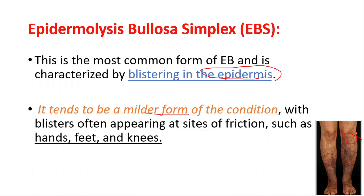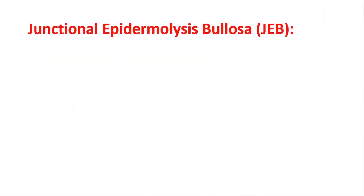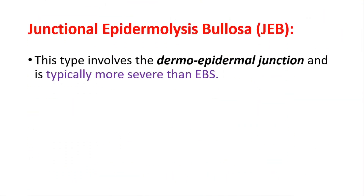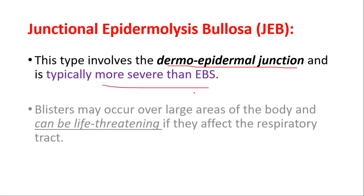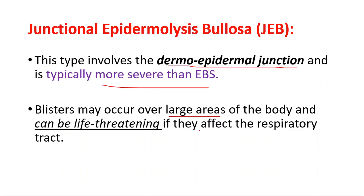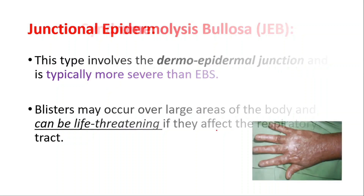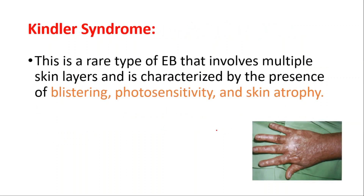Junctional epidermolysis bullosa involves the dermo-epidermal junction — the junction between the inner and outer layer — and is typically more severe than EB simplex. Blisters may occur over large areas of the body and can be life-threatening if they affect the respiratory tract. Kindler syndrome is a rare type that involves multiple skin layers and is characterized by blistering, photosensitivity, and skin atrophy.